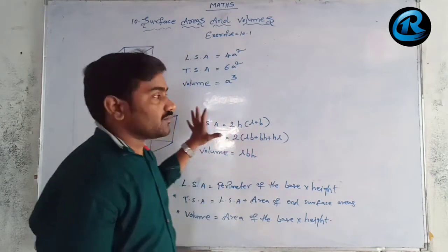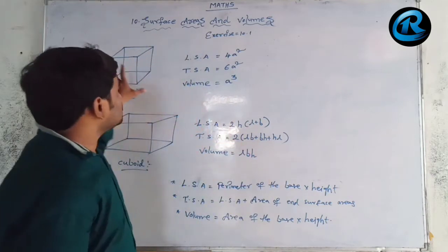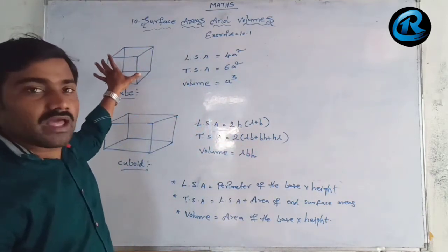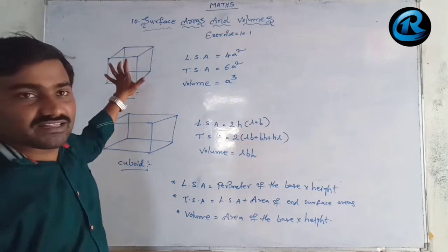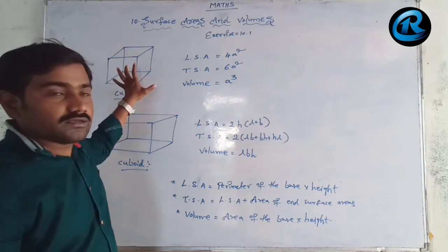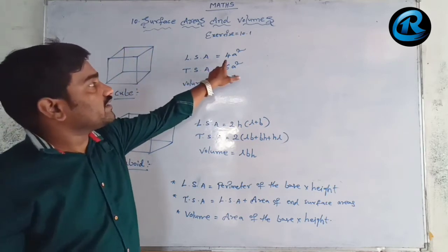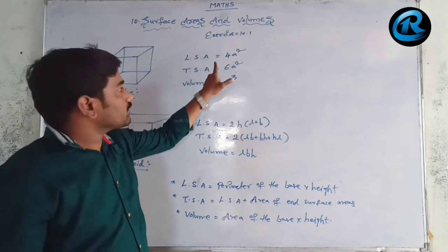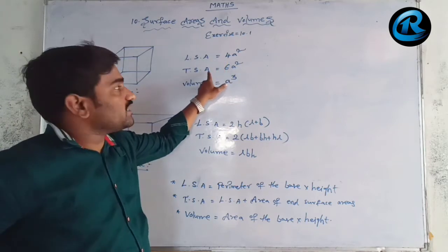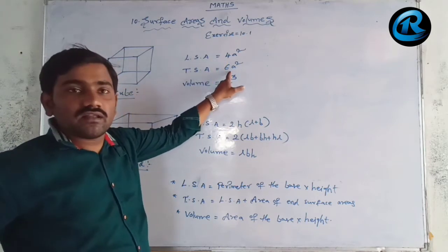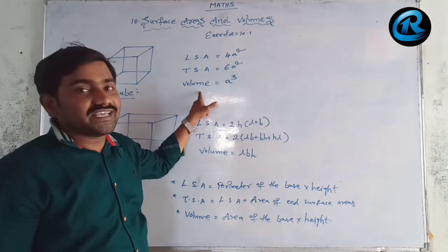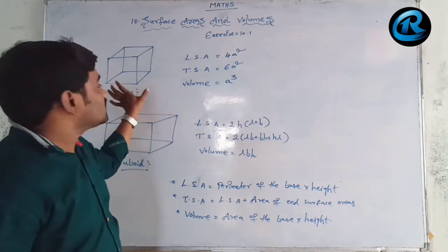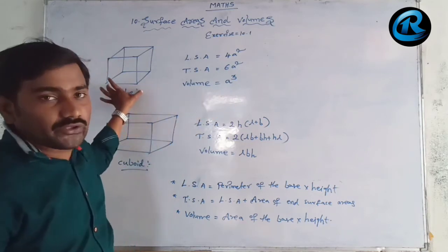These are the formulas based on a cube. A cube will have all sides equal in length. The lateral surface area of a cube is 4a squared. The total surface area of a cube is 6a squared. The volume of a cube is a cubed, where 'a' is the side of the cube.